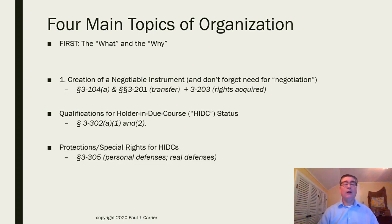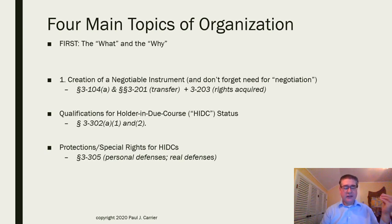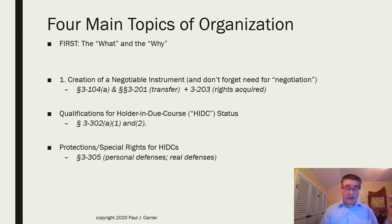Holders in due course who take these instruments in the proper ways have special rights such that the payment obligation has to be honored even if something goes wrong with the underlying contract. Let's say that you buy an automobile and it explodes — you want to stop paying. If a holder in due course is holding proper Article 3 negotiable paper, you have to continue to pay that holder in due course, because that person is innocent of any breach of contract. What's left is the dissatisfied party can sue for breach but still has to pay that innocent third party. That is the primary magic of Article 3.